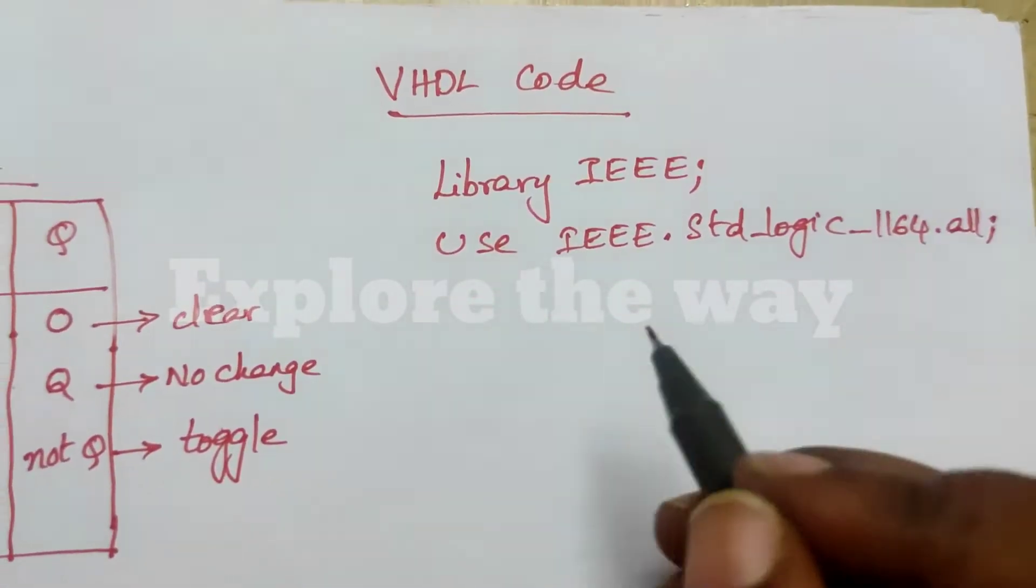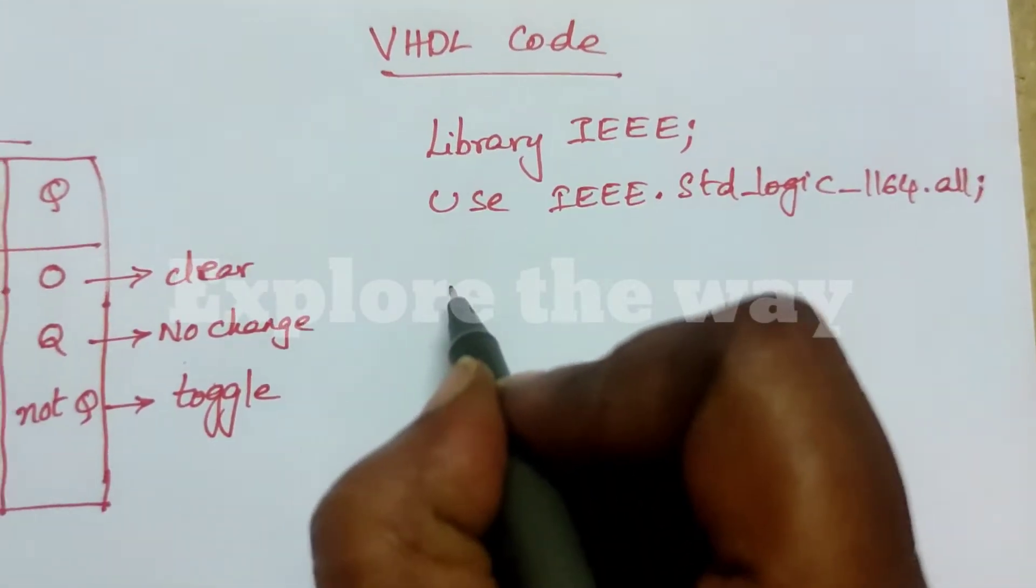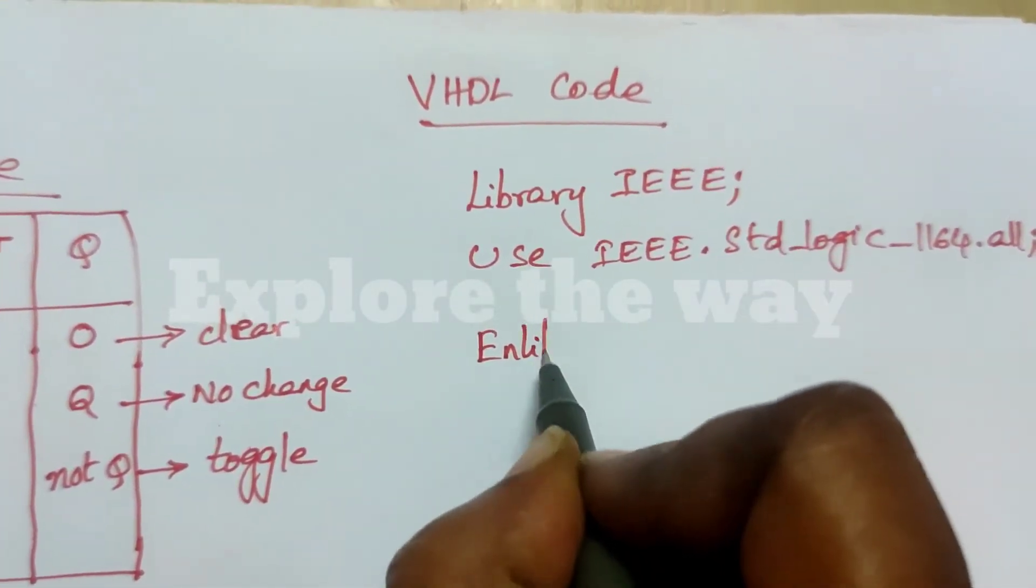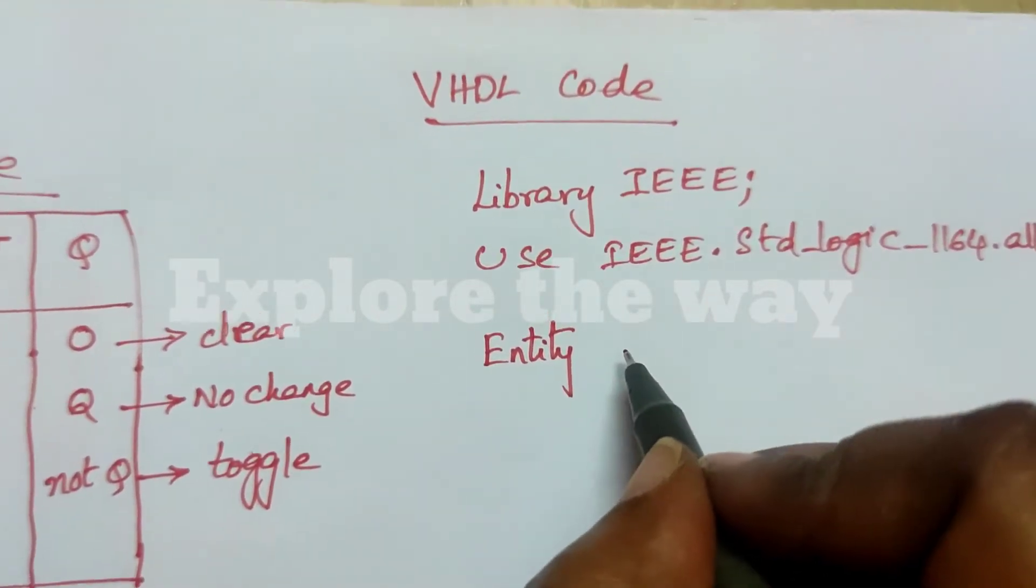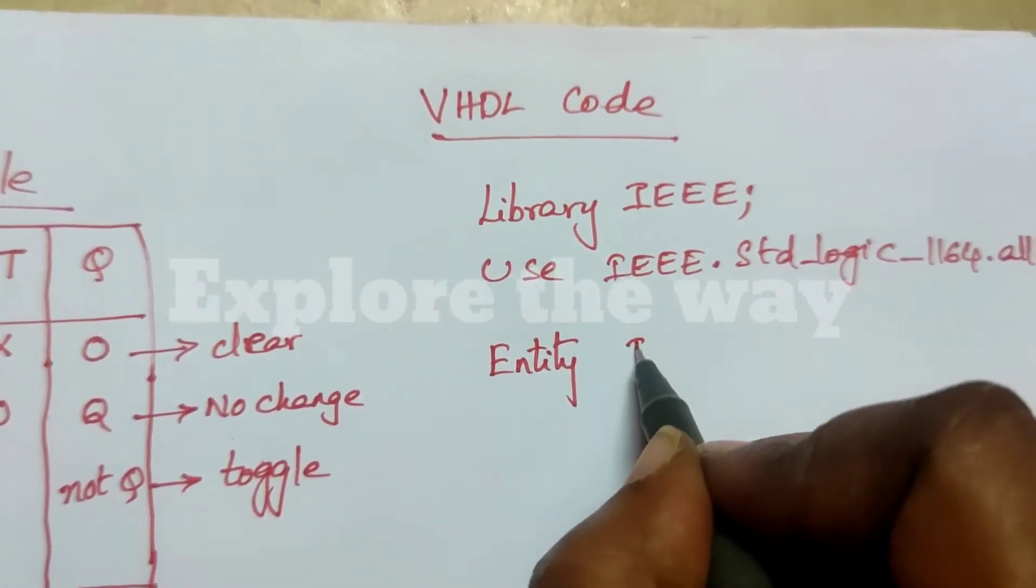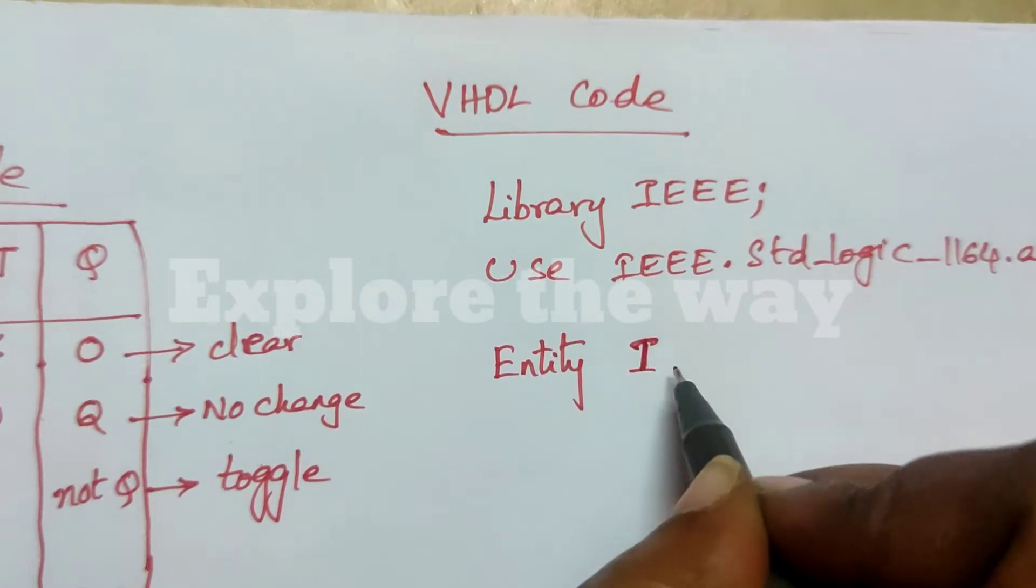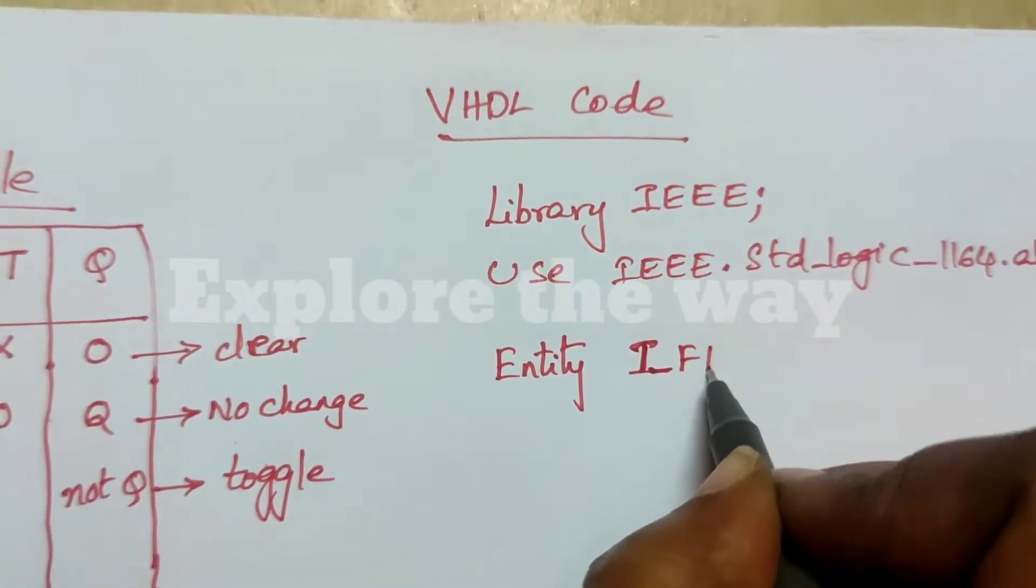And the next part is entity. Now write the entity name as T flip-flop, T underscore FF.